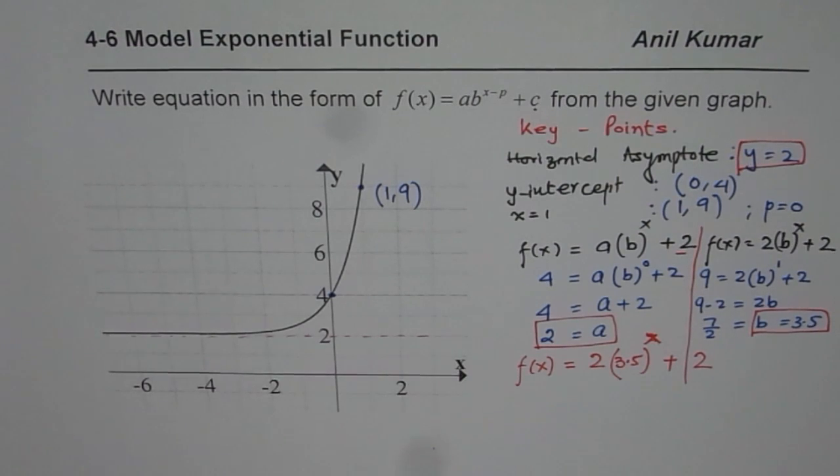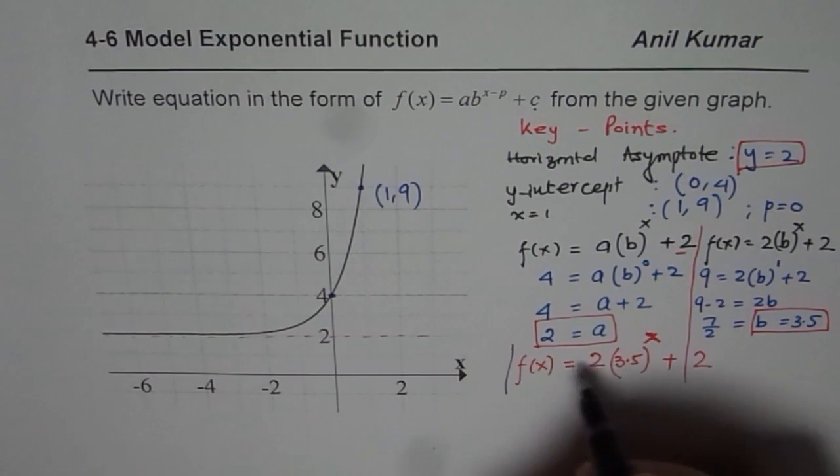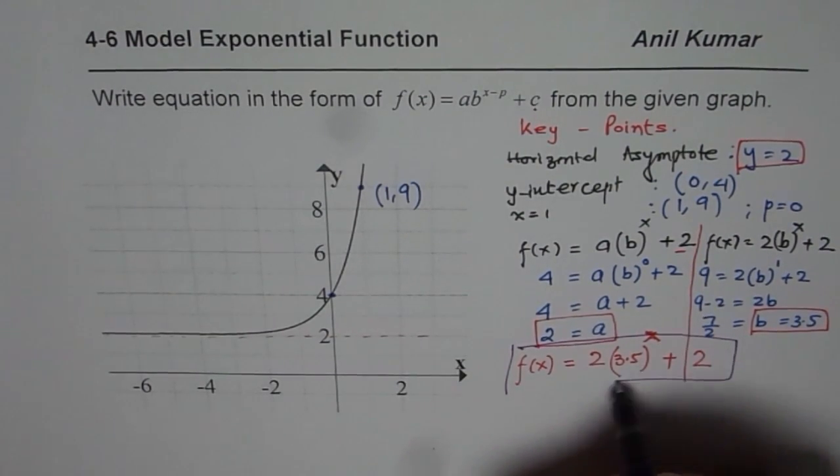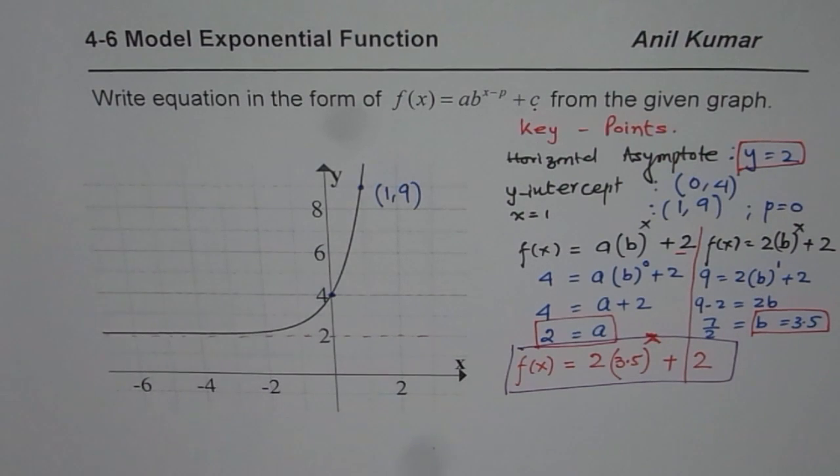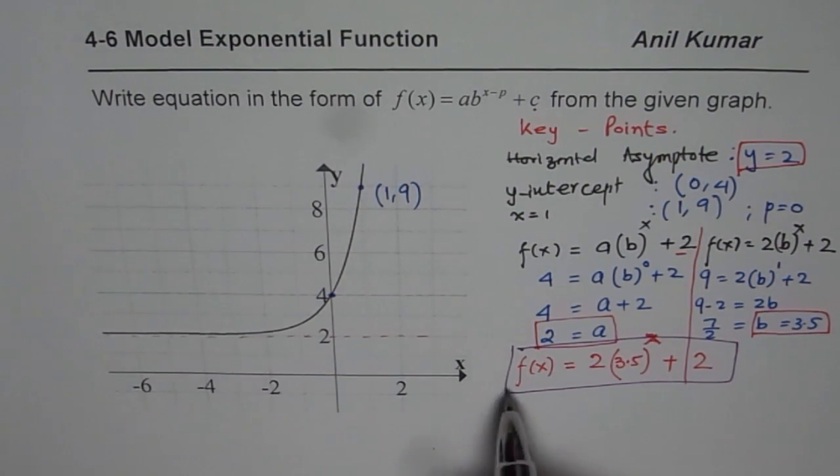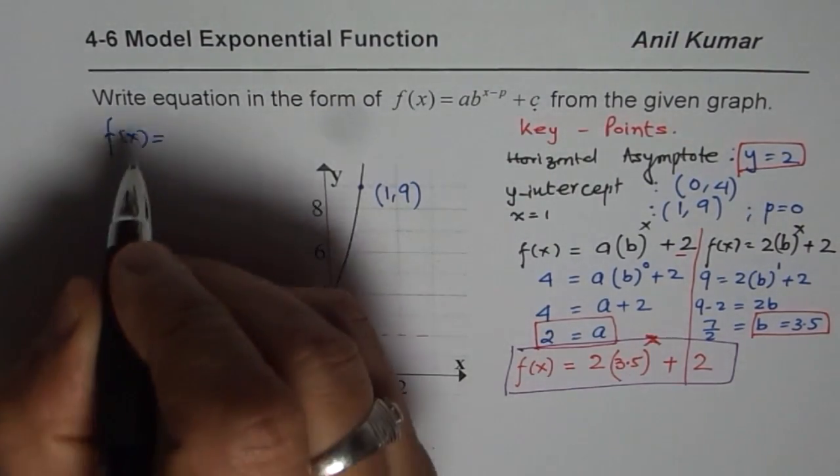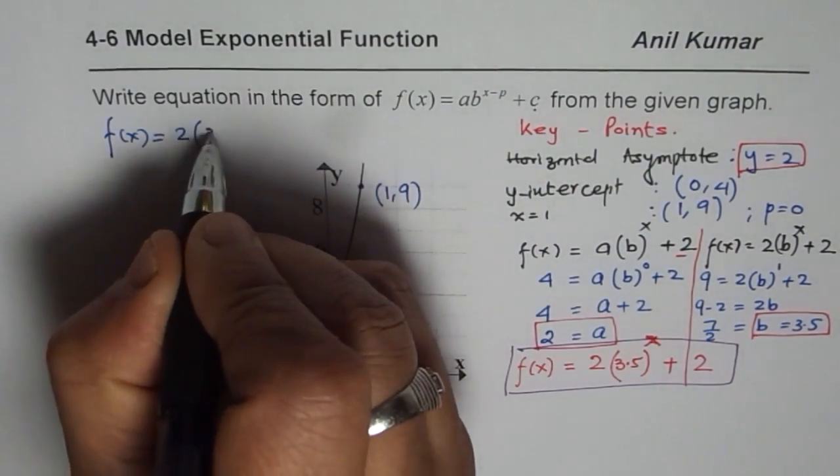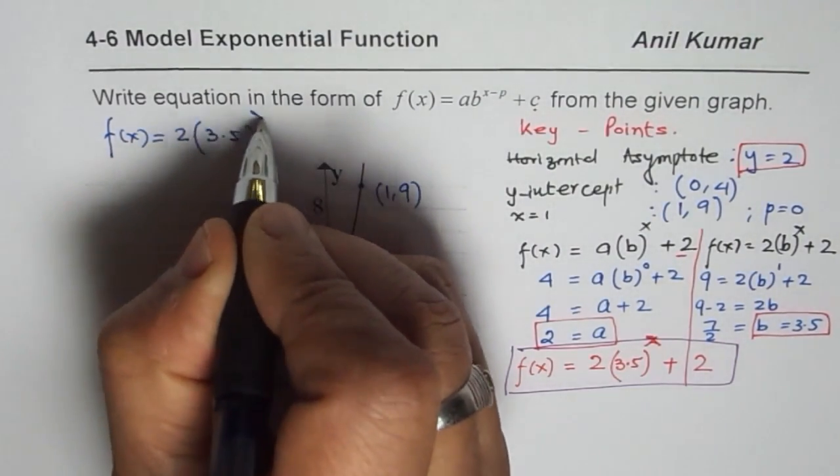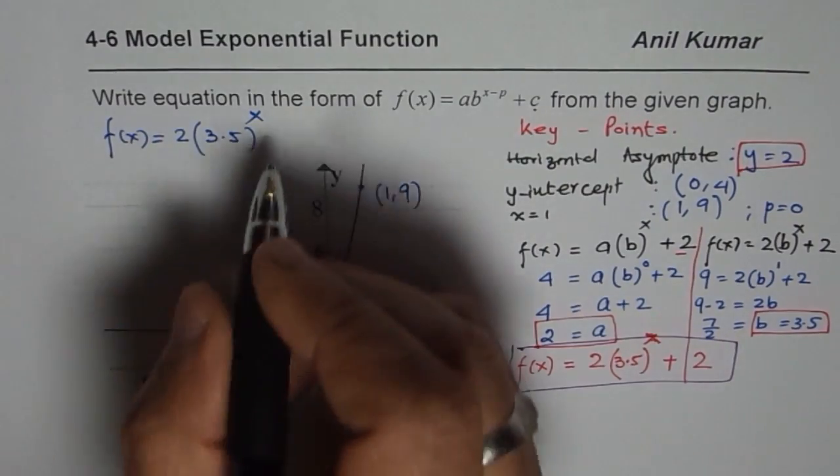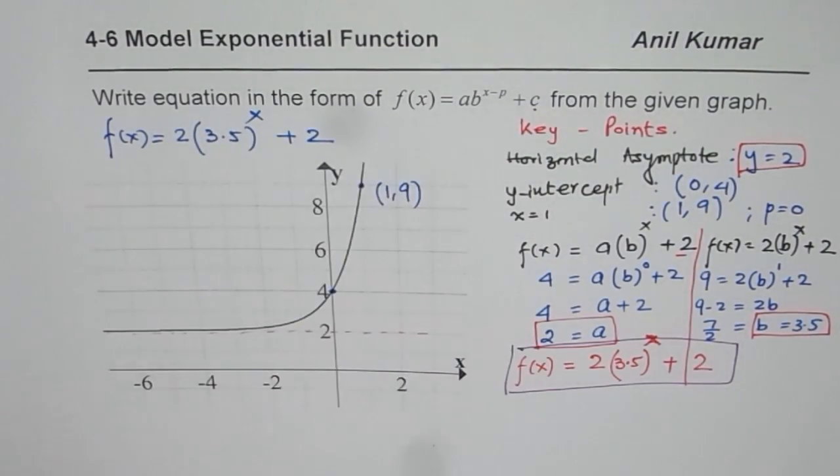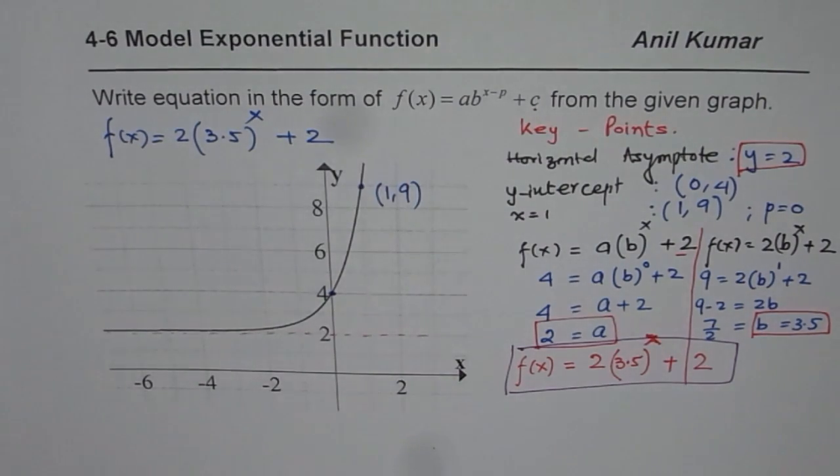Let me write very clearly here. The equation for this function is f(x) = 2 times (3.5) or (7/2) to the power of x plus 2. So that is how we can get the equation of an exponential transformed function.